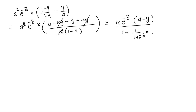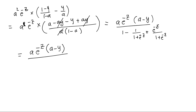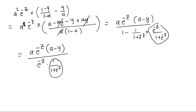Solving the denominator: 1 minus a equals 1 minus 1/(1 plus e to the minus z), which simplifies to e to the minus z divided by (1 plus e to the minus z). Substituting this back, the e to the minus z terms cancel and the remaining factor is 1 over (1 plus e to the minus z), which is just a. So this a cancels the a in the numerator, and we are left with simply a minus y. So del L over del z equals a minus y.